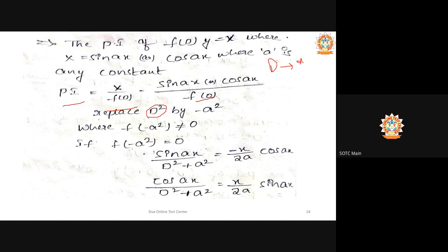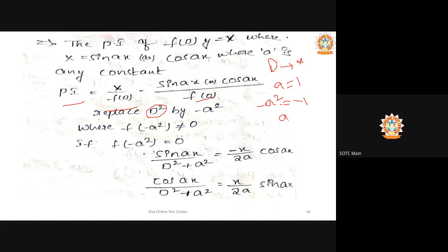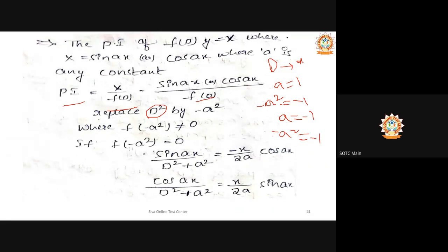What you need to do is replace D² by -a². So suppose a = 1, then -a² becomes -1. And note that -a² will always produce a negative value because a² is positive. In case the denominator does not reach zero, it's fine — you can just substitute D² with -a².